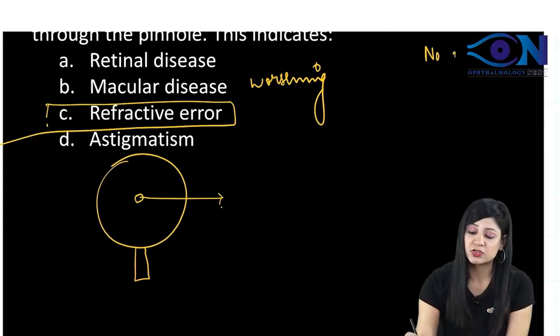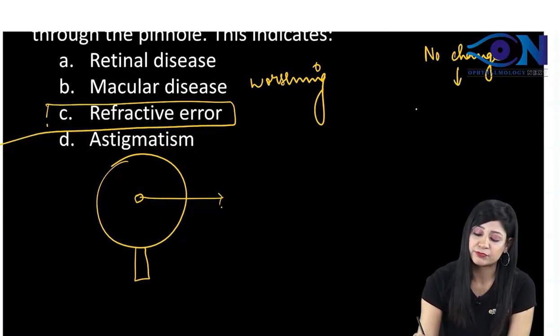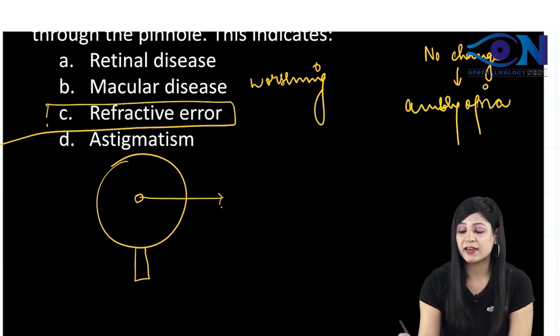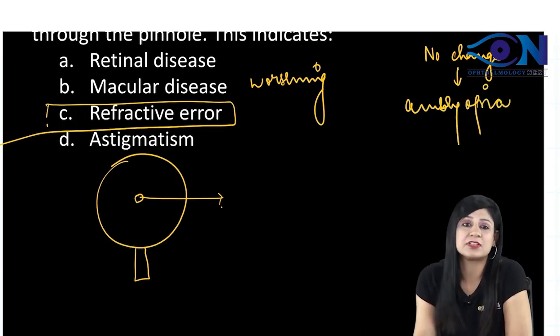if there is no change looking through this pinhole, then we can have the amyliopia. Maybe the patient is having the inorganic diminution of vision, that means there is no change.